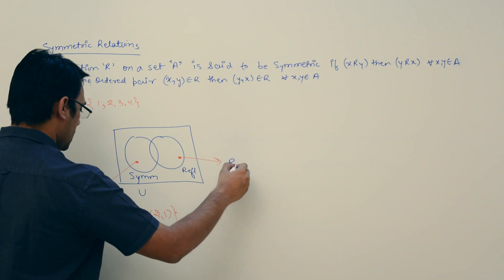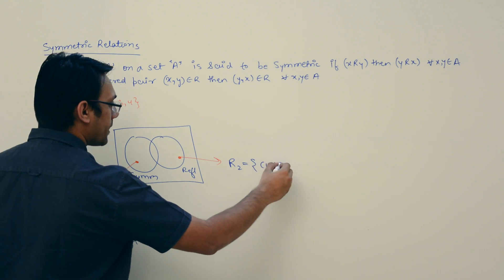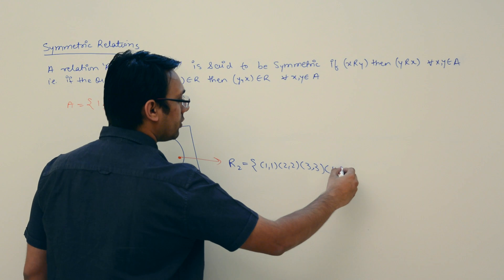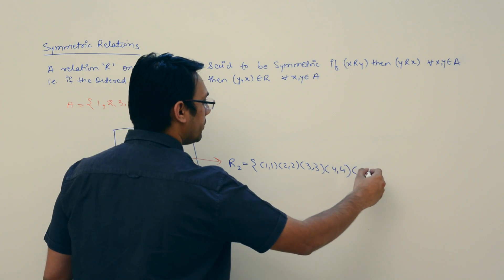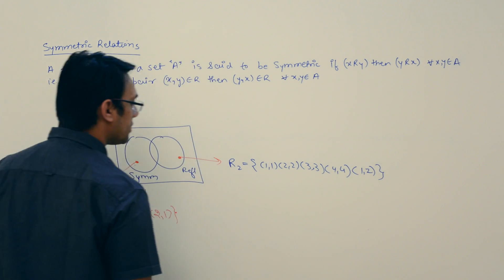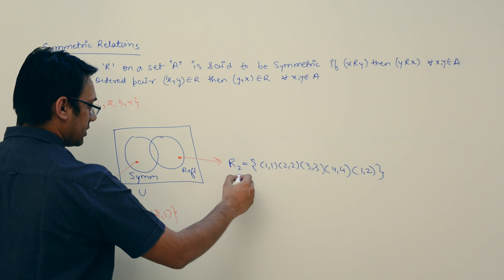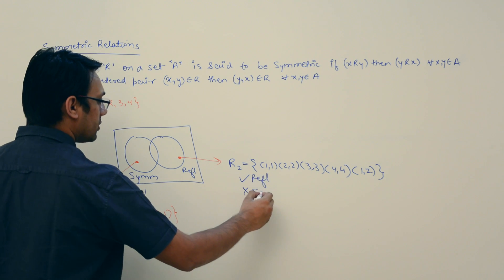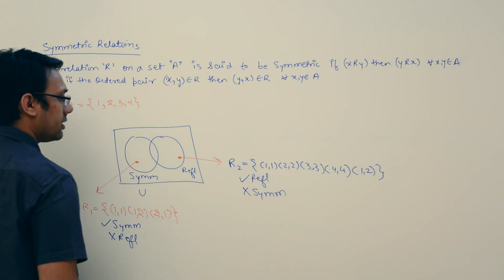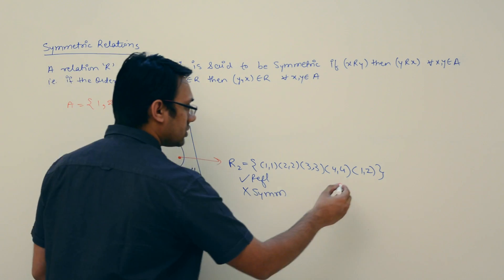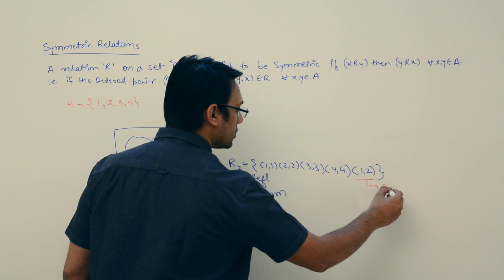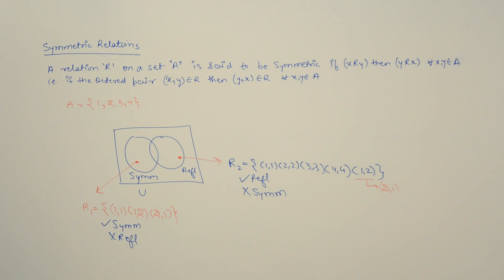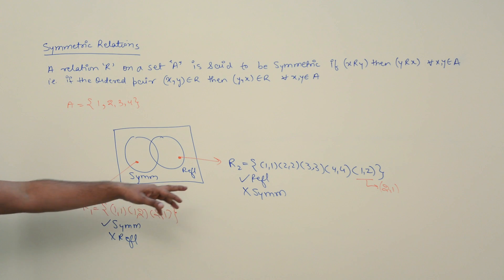For a relation that is reflexive but not symmetric, consider R2 = {(1,1), (2,2), (3,3), (4,4), (1,2)}. This relation is reflexive but not symmetric because if we have (1,2), we should also have (2,1) for symmetry, but (2,1) is not present.